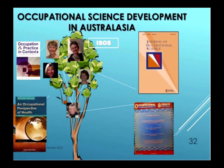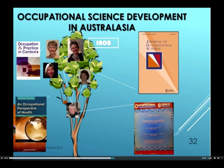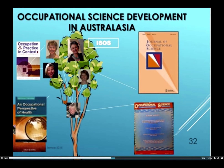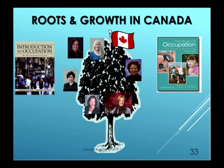Ann Wilcock produced, with a two-year research process for the British College of Occupational Therapy, a book — two volumes on the history of occupation for health — and continued developing her perspective on an occupational perspective on health. Because of her background in public health, her perspective was different from the traditions my colleagues and I had come from. Her shoots and roots developed into a tree — the Australian blue gum eucalyptus. We can see at the base Ann Wilcock, whose book is now in its third edition co-authored with Claire Hocking, along with Gail Whitford and Valerie Wright Sinclair, Allison Wicks who helped found ISIS — the International Society for Occupational Science — and Claire Hocking who developed the Journal of Occupational Science.